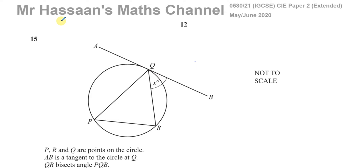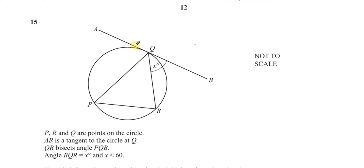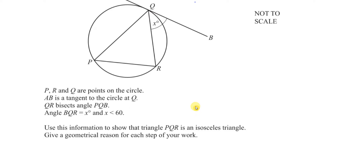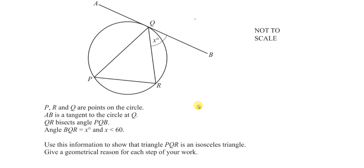This is question number 15, and here we have a circle with some angles in the circle. There's a triangle in here. It says P, R, Q are points on the circle. AB is a tangent to the circle at Q. QR bisects angle PQB. Angle BQR is X, and X is less than 60 degrees. Use this information to show that triangle PQR is an isosceles triangle. Give a geometrical reason for each step of your work.